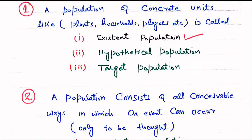Question number 1. A population of concrete units like plants, households, players is called — Existent population, Hypothetical population, or Target population. The right answer is Existent population.